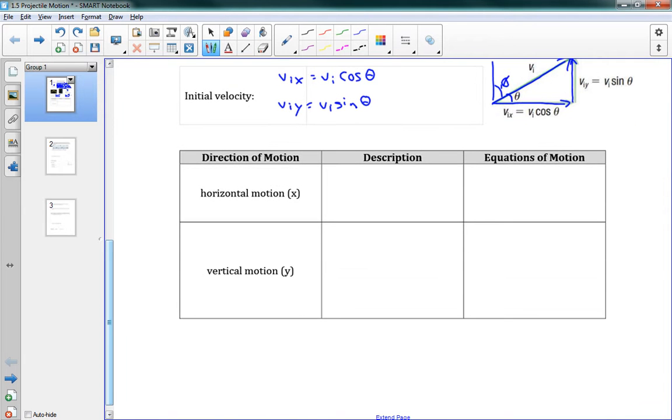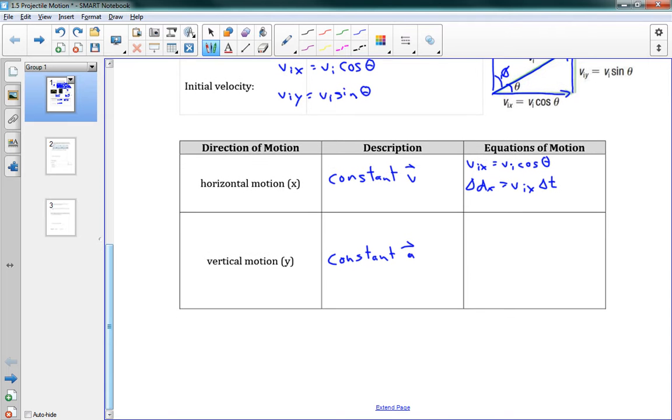Okay, a couple comments about what's happening in this projectile motion. So for our horizontal motion, we have constant velocity. Our equations for horizontal motion, we have vix is equal to vi cos theta. And delta dx, which is our range, is equal to vix times delta t. So however fast we're going horizontally, we just multiply that by our time. That's how far we're going to move horizontally. Hopefully that's straightforward.